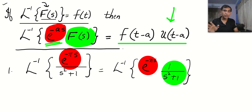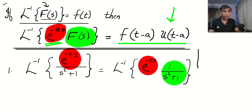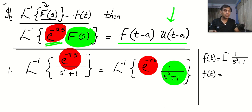Now take a very good look at the theorem. You can see red and green: red is e to the power minus π·s — leave it. The function is 1 divided by s squared plus 1. Do you know the Laplace inverse of 1 by s squared plus 1? Yes. So on one corner I am going to write f of t equal to the Laplace inverse of the green function. That gives f of t equal to sine t.